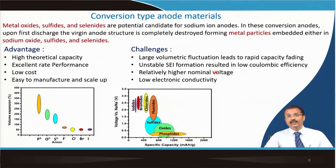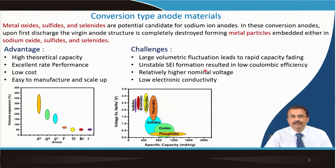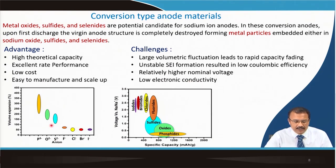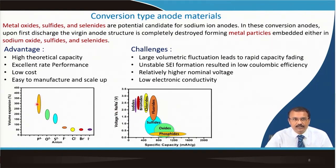Challenges for conversion-type anodes include large volumetric fluctuation leading to rapid capacity fading, unstable SEI formation — we do not want a thicker SEI impervious to sodium ion diffusion — and the fresh surface of the negative electrode material getting exposed, causing the SEI layer to reform repeatedly. Relatively higher nominal voltage compared to hard carbon or expanded graphite and lower electronic conductivity are also drawbacks.